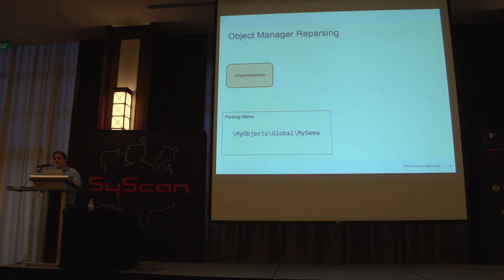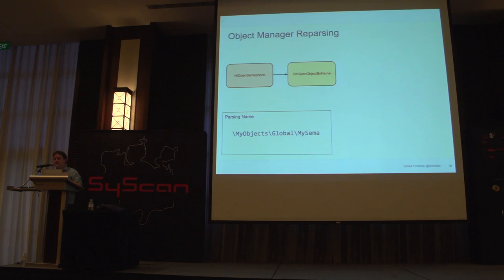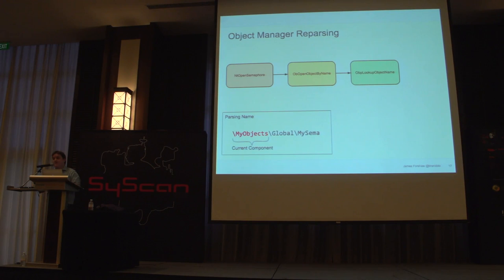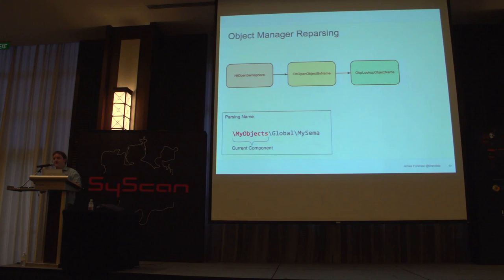Let's assume we've got a semaphore we want to open by name. How does the object manager handle the process of actually opening that when it encounters symbolic links? We call the system call NtOpenSemaphore and pass it a special name. That passes the string to an OpenObjectByName function, which passes it along to a special function called LookupObjectName. This is where the magic happens — it starts splitting up the path using backslash as the separator and breaking it into individual structures trying to find a destination.